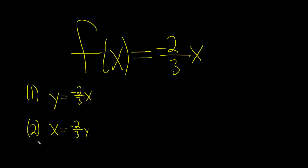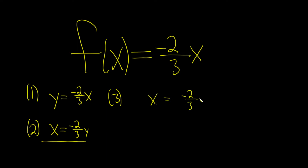The next step when finding the inverse is to solve for y. So step 3, we have to get rid of the negative and also get rid of this fraction. So I'm thinking we can multiply both sides by the reciprocal.